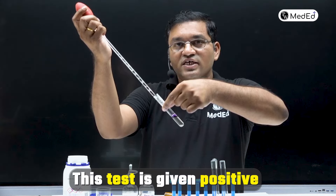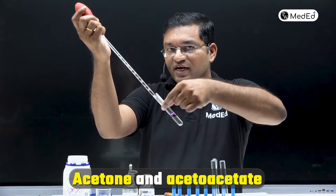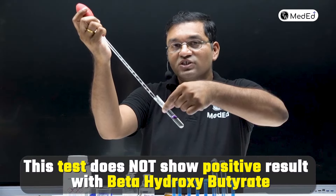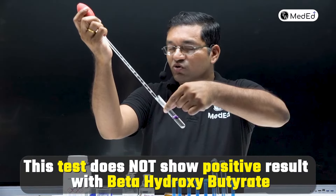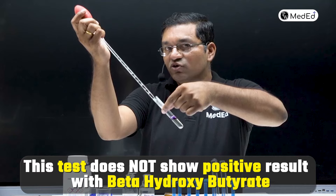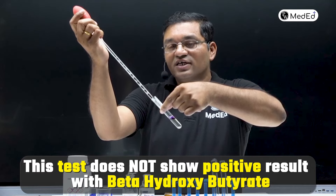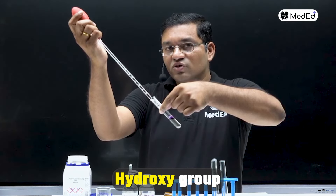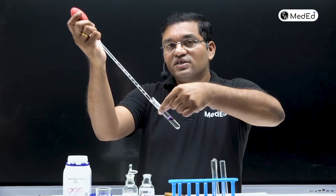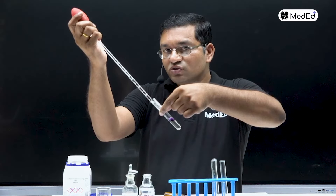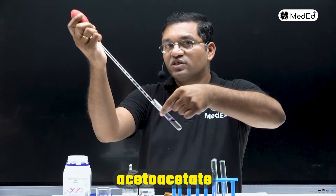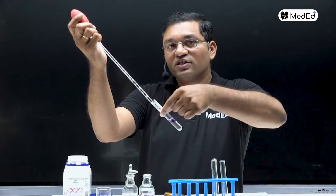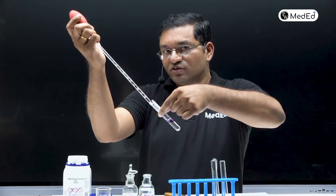This test is given positive by acetone and acetoacetate. Beta-hydroxybutyrate does not give this test positive because it is a false ketone body — it contains a hydroxyl group. However, it is produced from acetoacetate, which is a primary ketone body, which is why it is included in the ketone body group.